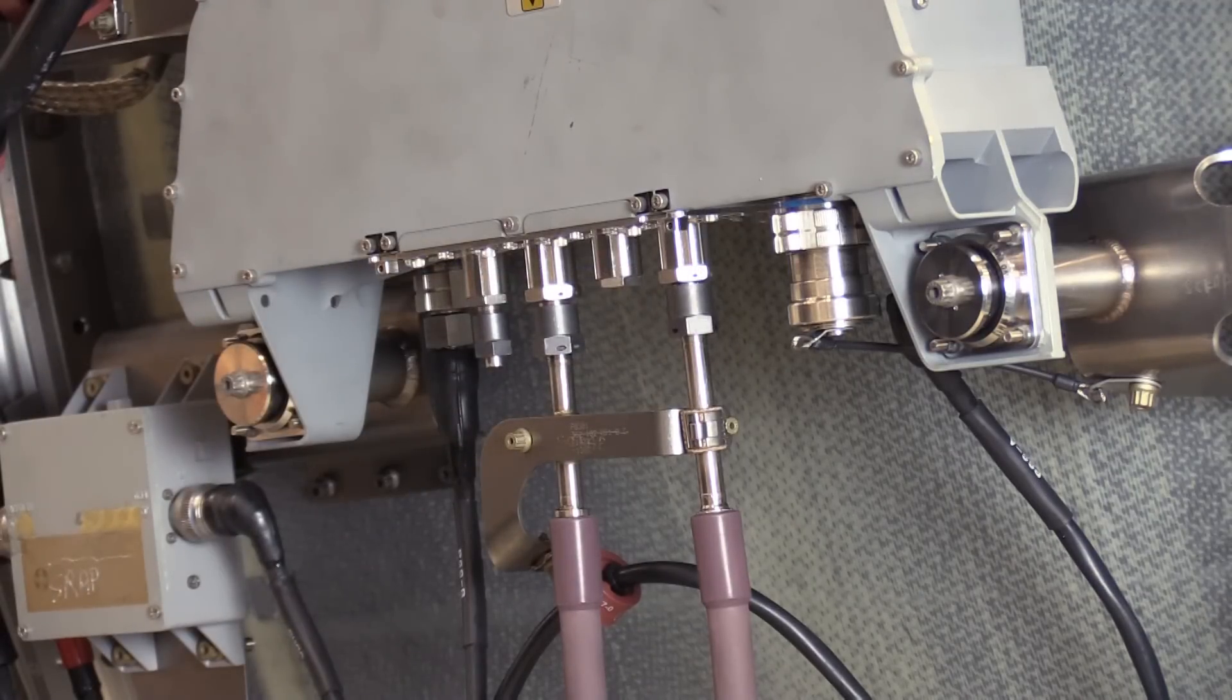Once the lines are torqued, we're going to go ahead and make sure that those lines get safety wired. With the fittings reconnected, torqued, and safety wired, be sure to follow the procedure for any ground runs or ground tests that need to be accomplished.